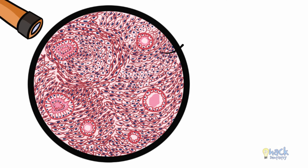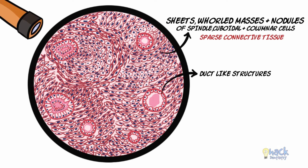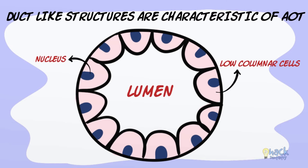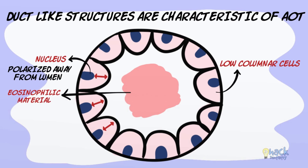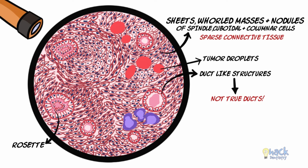Under the microscope, AOT shows sheets, strands, or whorled masses and nodules of spindle-shaped, cuboidal, or columnar cells with very little connective tissue. In the midst of these cells, characteristic duct-like structures as well as rosette-like structures are present. These duct-like structures are not true ducts and are composed of low columnar cells with nuclei polarized away from the lumen. The cells surround a lumen which may or may not possess eosinophilic material. The duct-like structure sometimes possesses a rim of eosinophilic material just above the cells and around the lumen, called a hyaline ring. There may be droplets of eosinophilic material in the midst of these sheets or nodules of cells, called tumor droplets. Also scattered throughout the lesion are foci of calcified material.